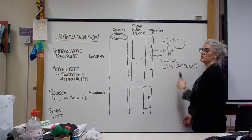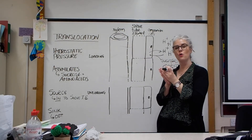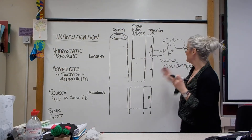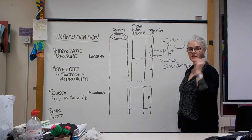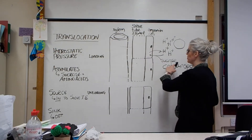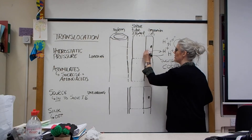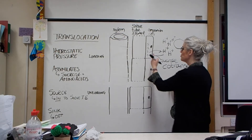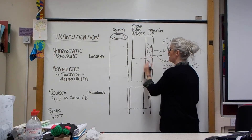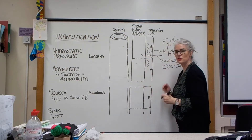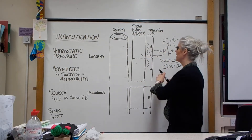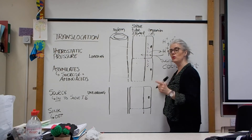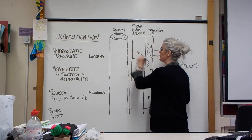This is co-transport. The hydrogen ions and sucrose move together through co-transport proteins into the companion cells — they can't move through independently. As sucrose builds up in the companion cells, it then diffuses into the sieve tube elements. This increases the solute concentration inside the sieve tube elements, which decreases the water potential.